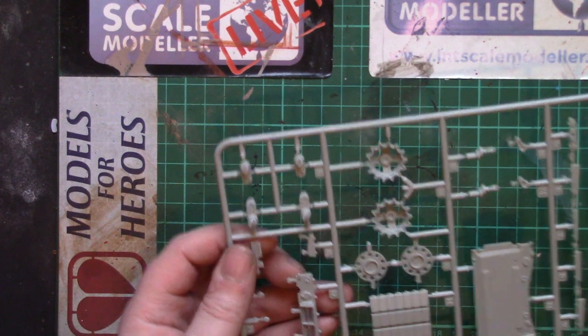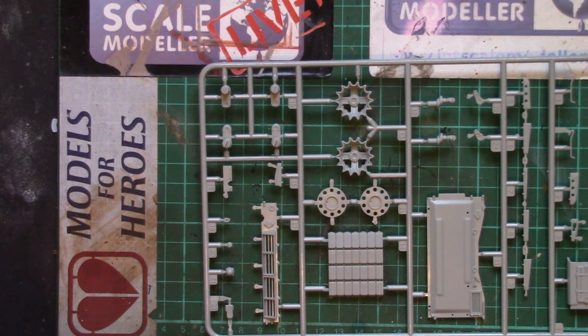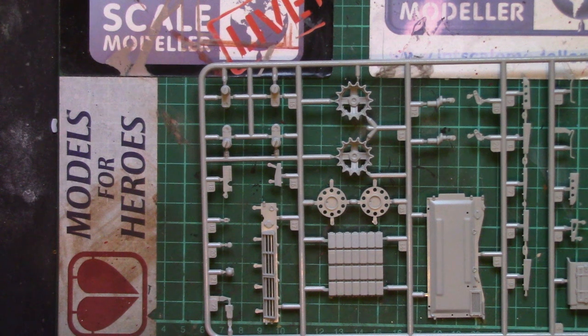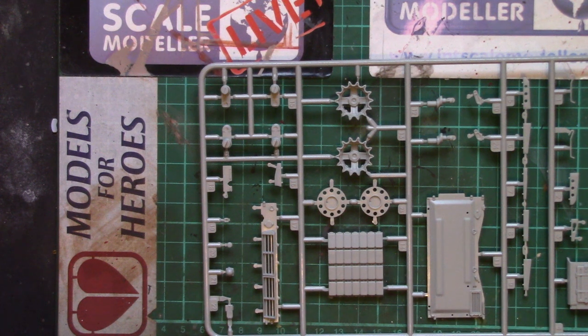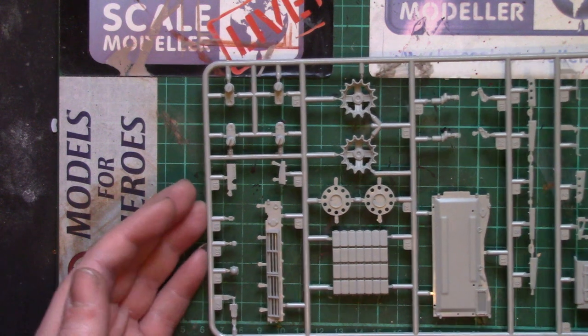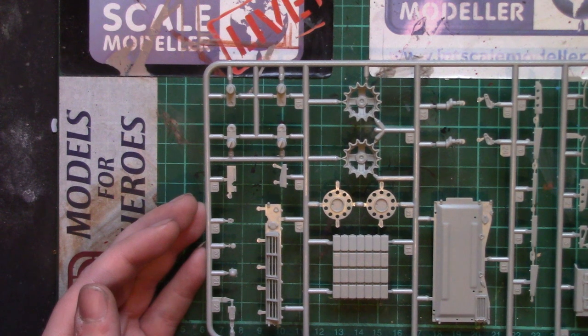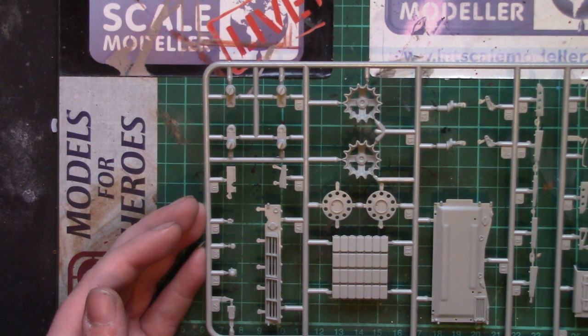Another set of sprockets, rear deck ERA - I don't actually think this version has ERA on it. When we look at the instructions in a bit we'll see we're probably not going to be using every single part off of the sprues, but spare bits are always good to have. There's mounting points for the fenders or fender hangers, more storage box lids, more suspension arms. Again sensibly placed sprue gates that aren't massive.